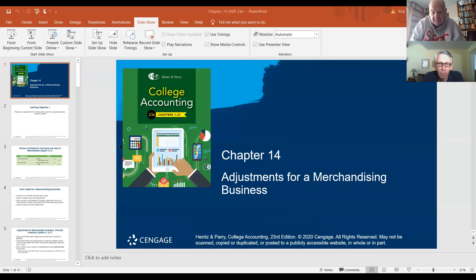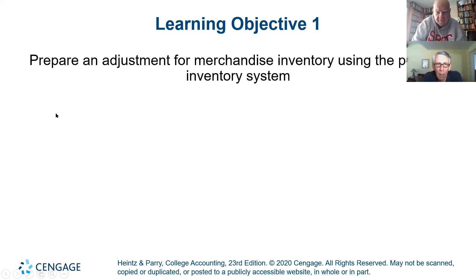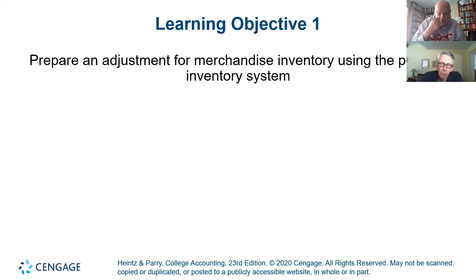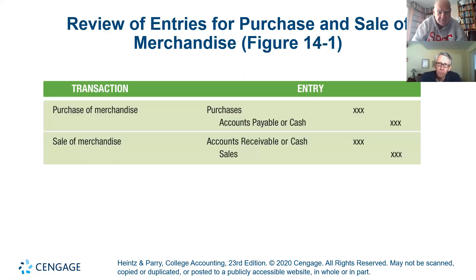We're in Chapter 14 now. Let me share the screen. Chapter 14 is almost a repeat of a lot of the things we did in the first five chapters, except they're taking us into a perpetual system environment, so there's a few little differences. They're going to talk about adjustments needed under the inventory system. It's really just one new entry and a couple of different ways of doing the same entries we did earlier. So, merchandise inventory.